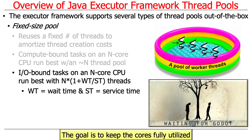To determine the right number of threads for I/O-bound work, you need to analyze the typical waiting time (WT) for an operation and the typical service time (ST). The formula is N × (1 + WT/ST), where N is the number of cores. If waiting time is very low, WT/ST approaches zero, so you need roughly N threads. The intuition is that with very little waiting, you don't need more threads than cores.